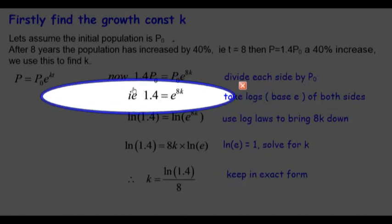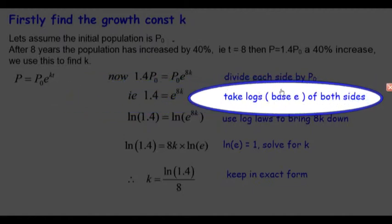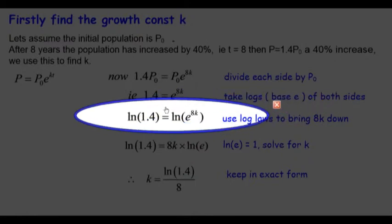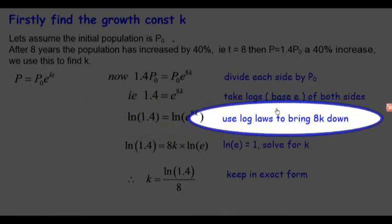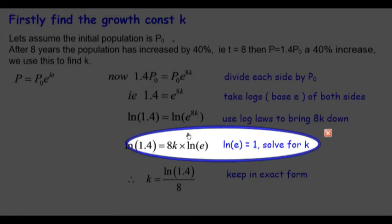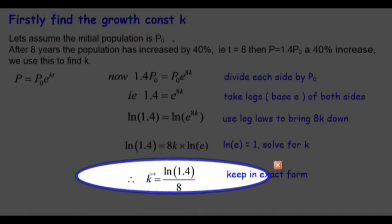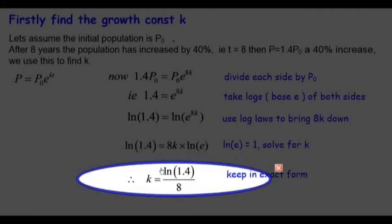Now we take the natural log of both sides to base e: ln(1.4) equals ln(e^(8k)). We use the index laws to bring the power down, so 8k comes down the front. ln(e) equals 1, then solve for k. So k equals ln(1.4) divided by 8, and this is in exact form.